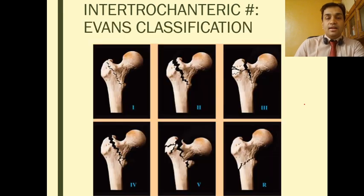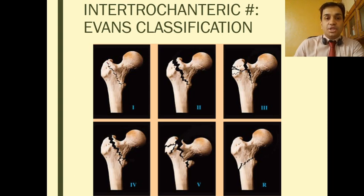There is another classification called the Evans classification. Evans Type 1 is an undisplaced simple two-part intertrochanteric fracture. Evans Type 2 is a displaced two-part intertrochanteric fracture.